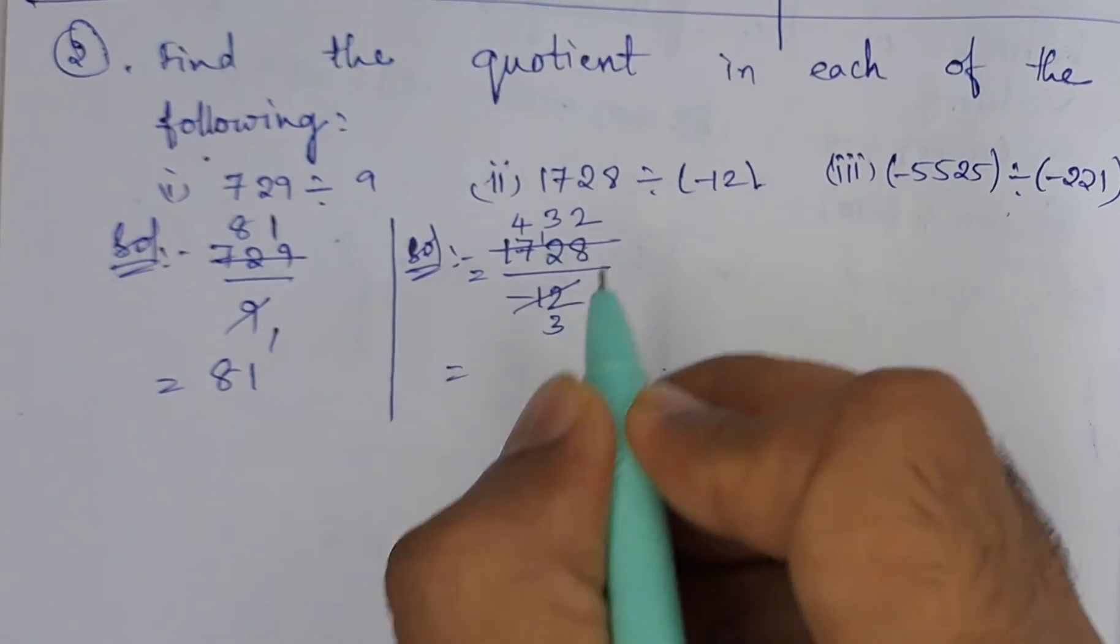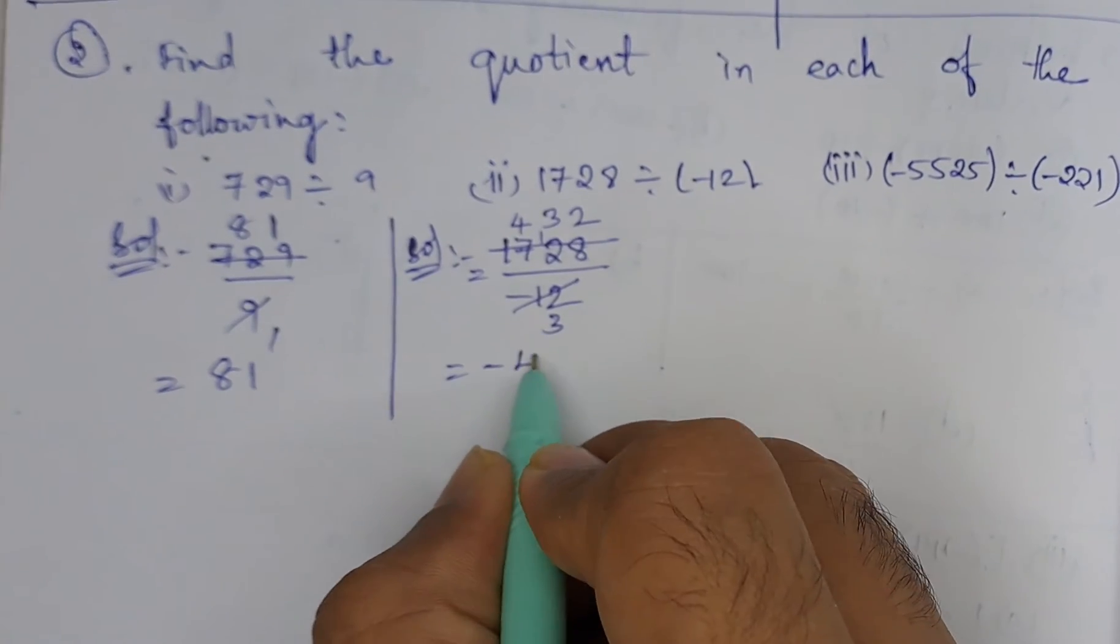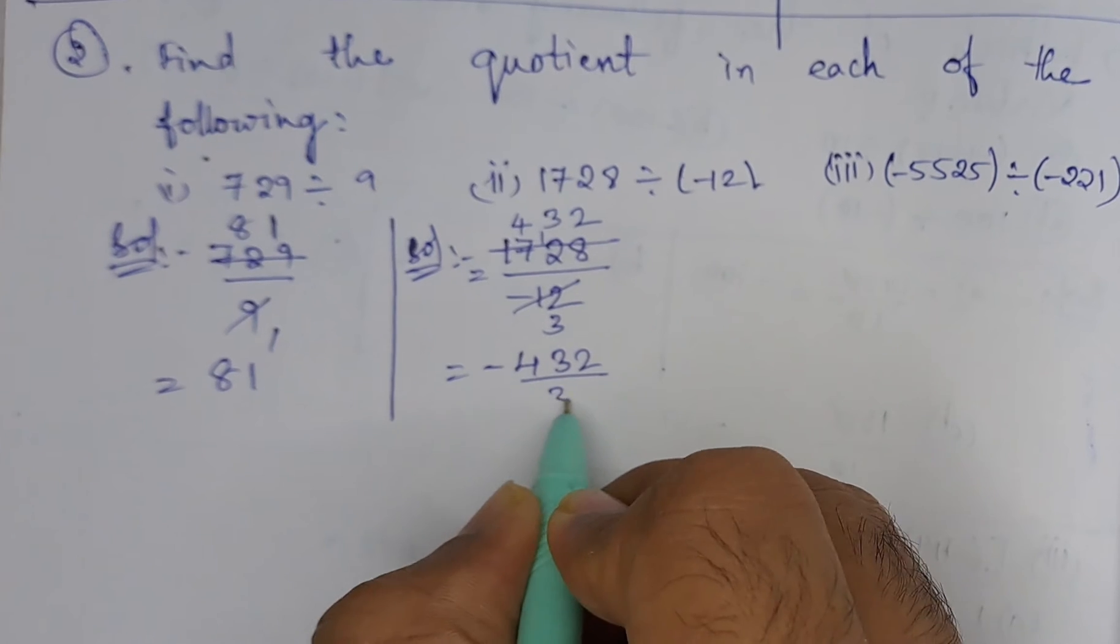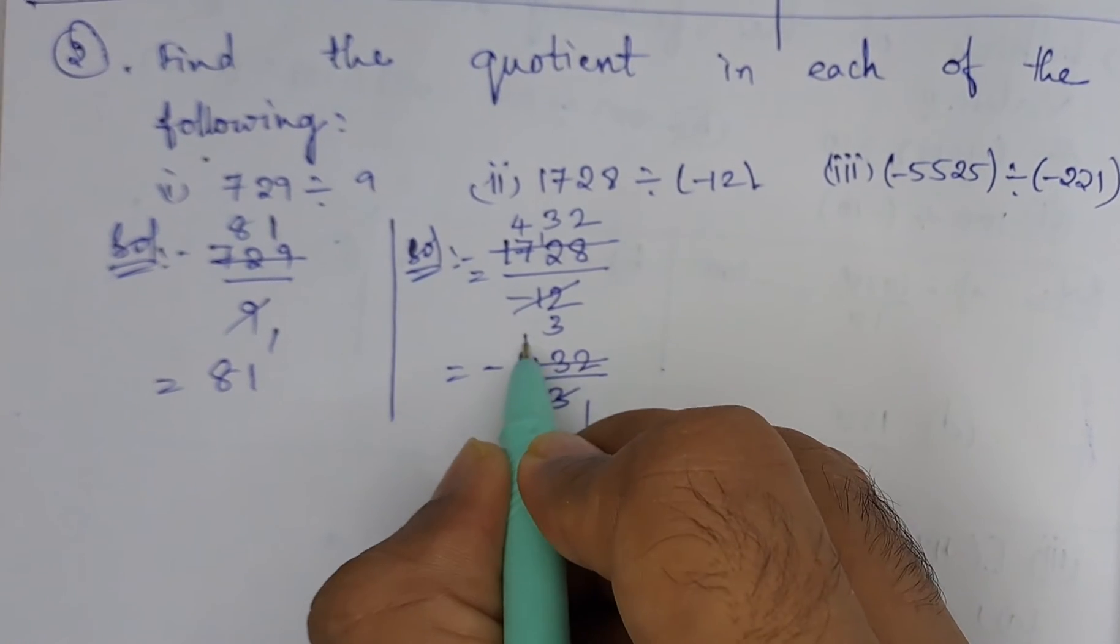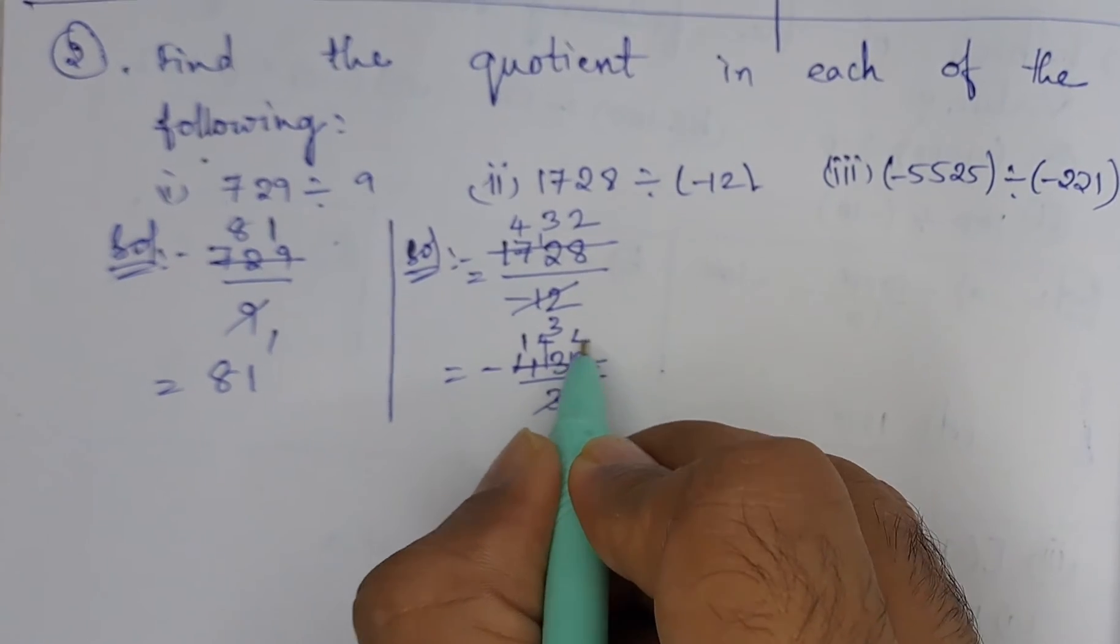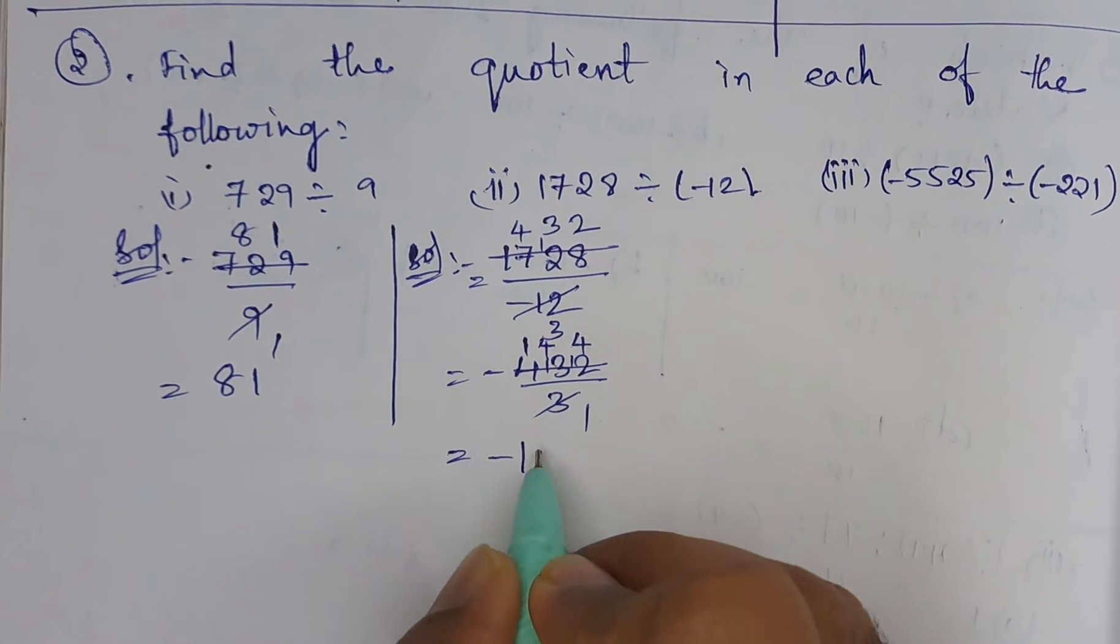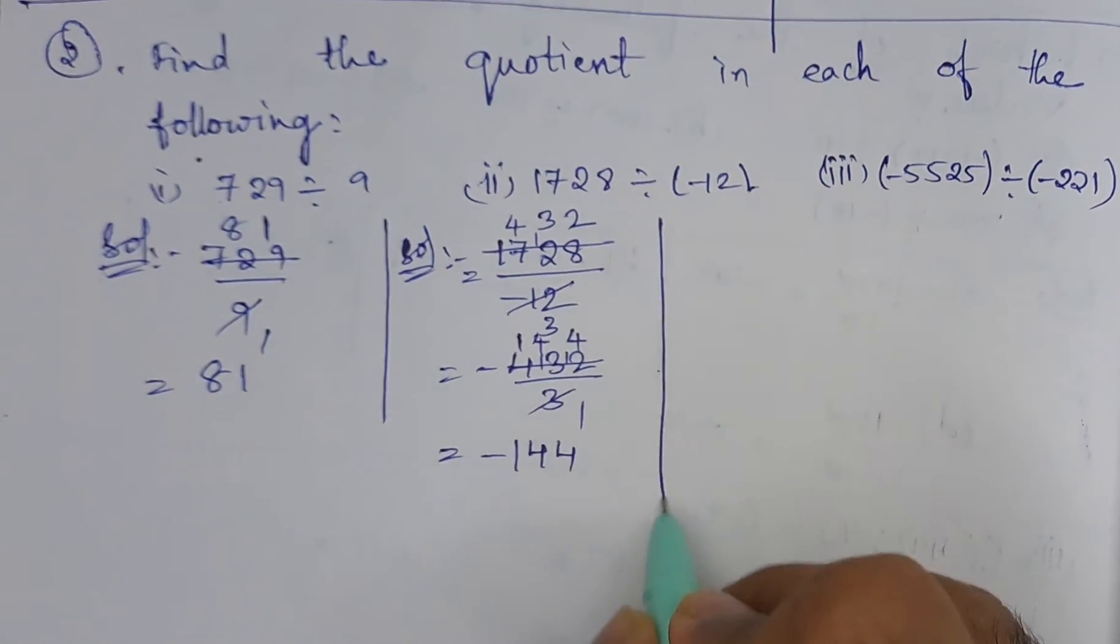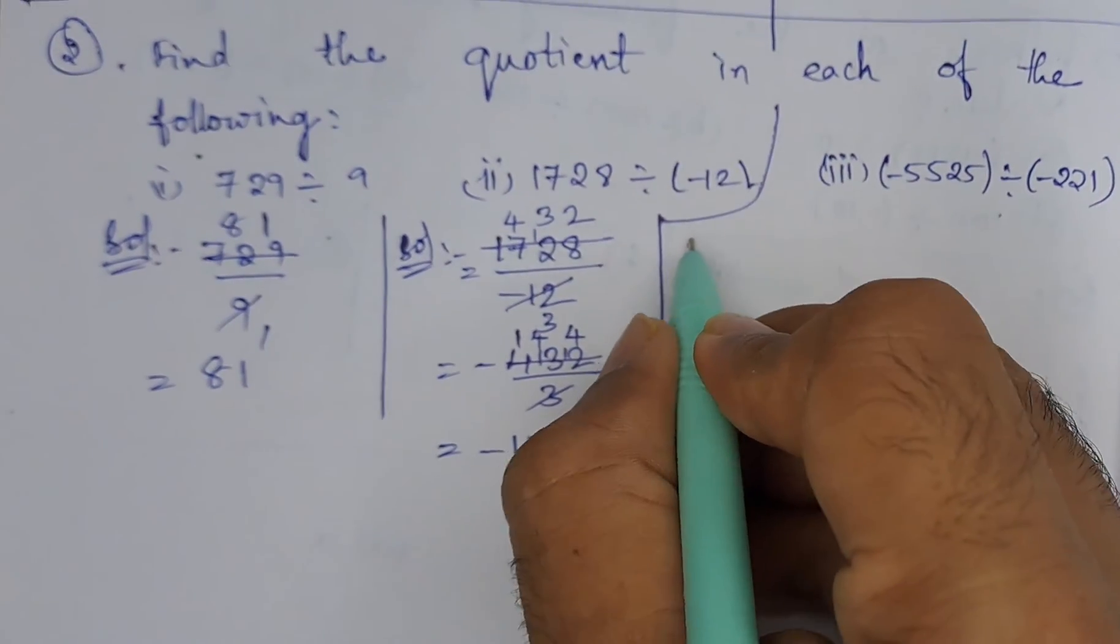So minus 432 divided by 3: 3 ones are 3, 1 times 3 is 3, 3 fours are 12, 1 left, 3 fours are 12. So the answer is minus 144. Now let us solve the third bit.